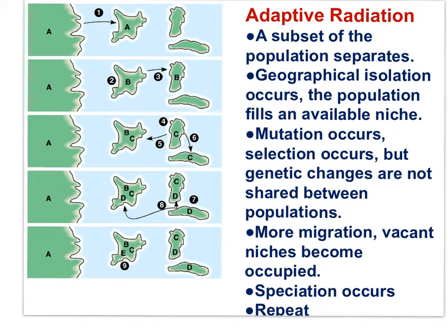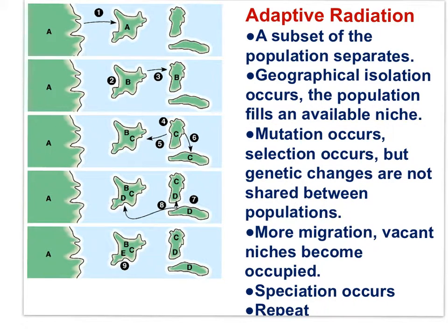Adaptive radiation is a form of allopatric speciation, where an ancestral population colonizes an unoccupied niche — as seen here as population A reaches this island — resulting in reproductive isolation and ultimately speciation to species B. A population of species B then colonizes an unoccupied niche in a different location. Time passes, reproductive isolation occurs, allopatric speciation gives us species C. Repeat the process throughout time and we end up with five different species in different locations.